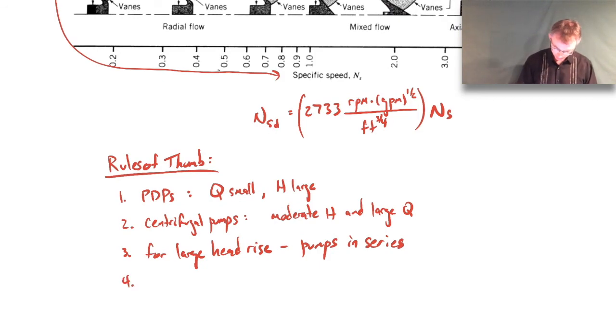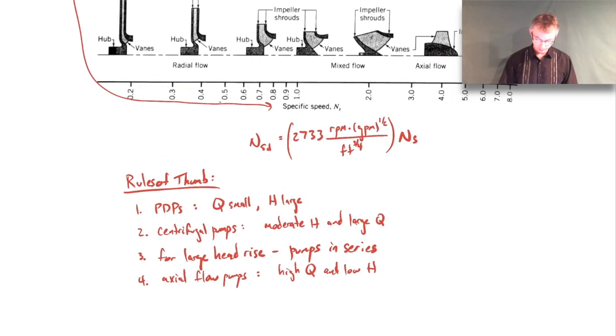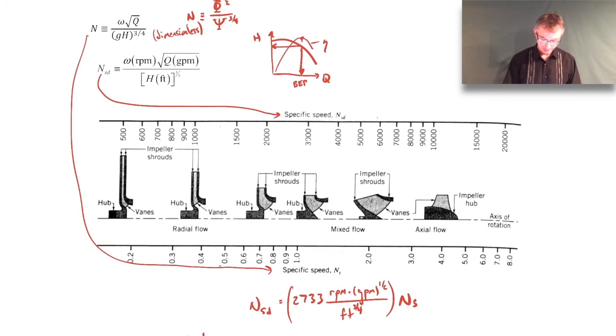And then the last rule of thumb is axial flow pumps. Those are for high flow rate and low head rises. And again, you can sort of figure those things out just from the specific speed since the specific speed again has the flow rate in the numerator and the head rise in the denominator. So large specific speeds means large flow rates, smaller head rises. Lower specific speeds correspond to lower flow rates, higher head rises.